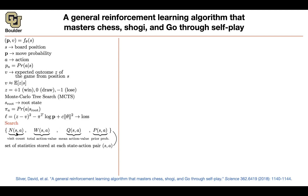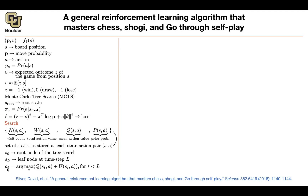For the search, for each pair of state and action — for each edge — you're going to keep a visitation count N, the total action value W, the mean action value Q which is W divided by N, and your prior P coming from your neural network. S0 is your root node of the tree, S_L is the leaf node at time step L. You're choosing actions based on your mean action value Q, and you also want to explore.